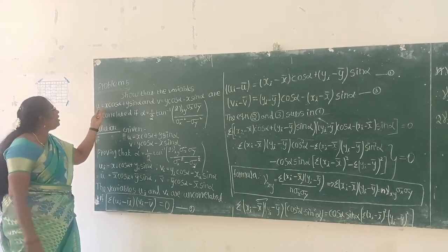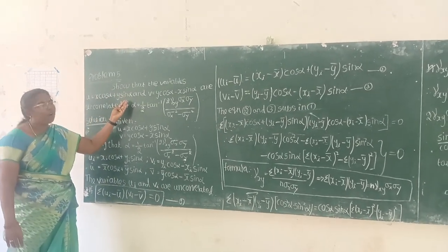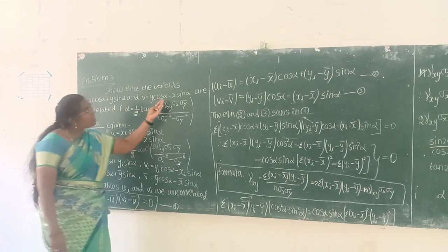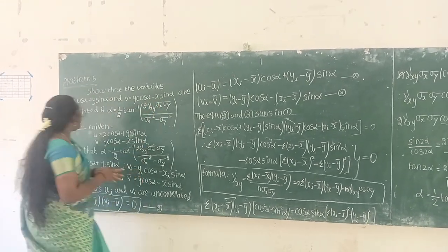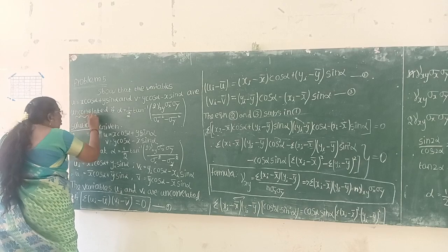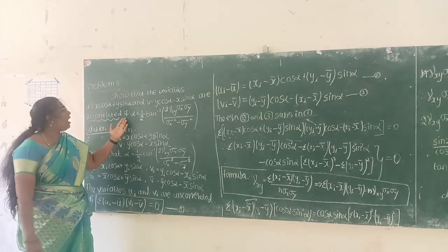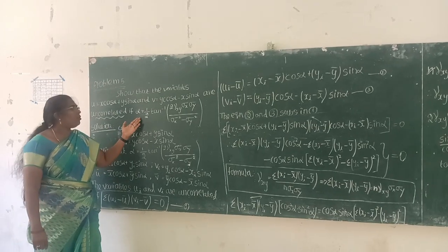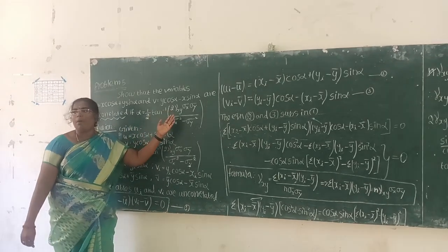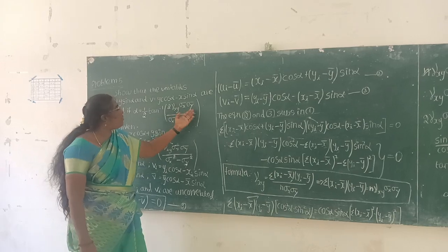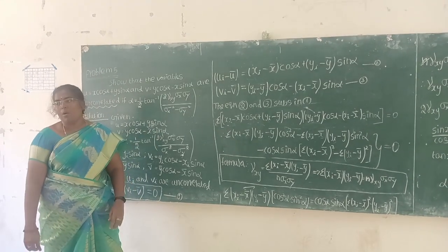Show that the variables u equals x cos alpha plus y sin alpha and v equals y cos alpha minus x sin alpha are uncorrelated. The angle for uncorrelated is alpha equals one-half tan inverse of 2 gamma xy sigma x sigma y divided by sigma x squared minus sigma y squared.